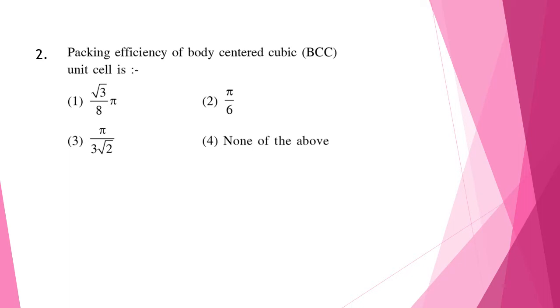So BCC has two atoms. So the formula will be 2 into the volume that is 4 by 3 pi r cube by the volume of the unit cell that is a cube. Then we write r in forms of a and it will be equal to root 3 by 4 a cube. So you can see the total formula and when we solve this, it will be equal to root 3 by 8 pi. So the correct answer is option 1.